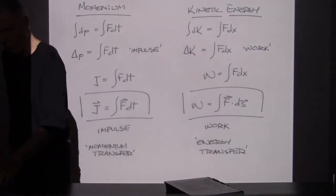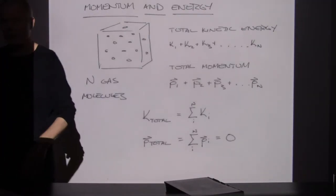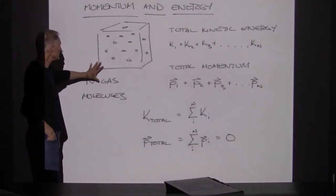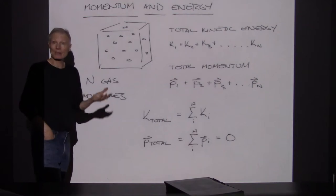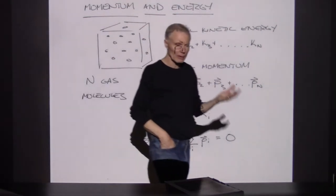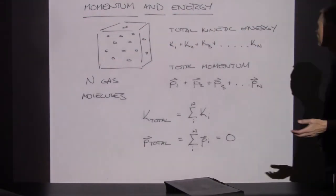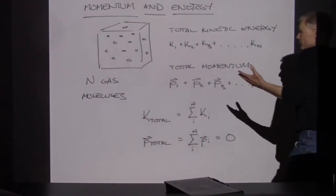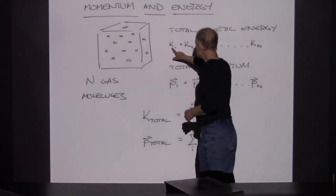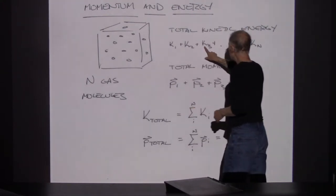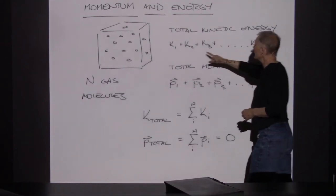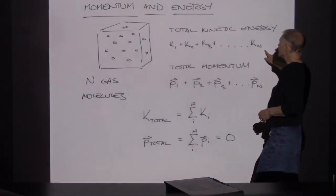The two quantities are related. Let's think about momentum and energy in terms of a collection of gas molecules. What's the total kinetic energy of all those gas molecules? To get the total kinetic energy, we would just start adding up all the individual kinetic energies. Energy is a scalar — I could add all of these kinetic energies together, and since they're all positive, they just get larger and larger.